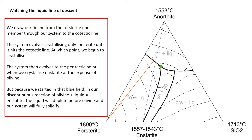Because we started in that blue field, liquid is going to be exhausted before olivine. So we'll crystallise enstatite at the expense of olivine, but the liquid will be exhausted. We'll end up with a system of forsterite, anorthite, and enstatite. No silica will become crystallised in this example.